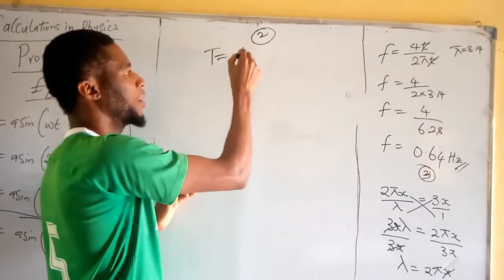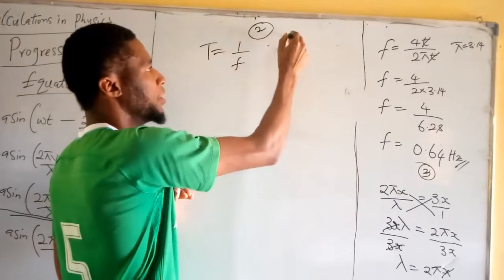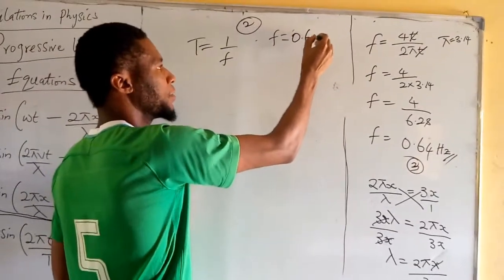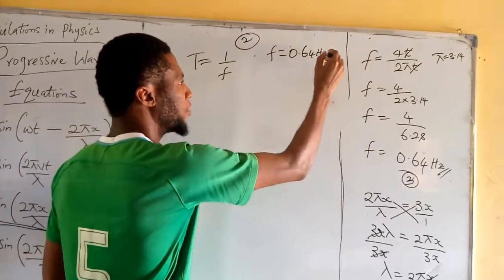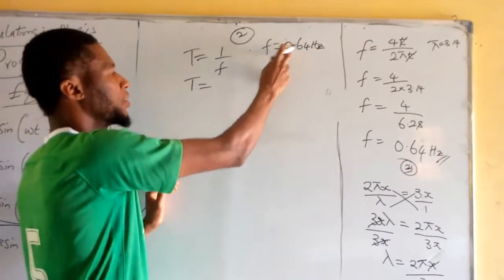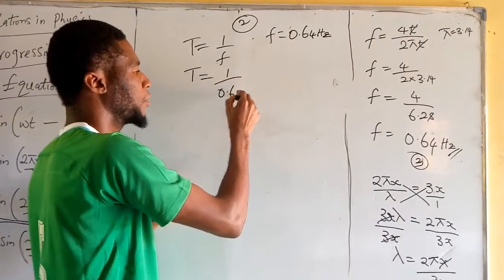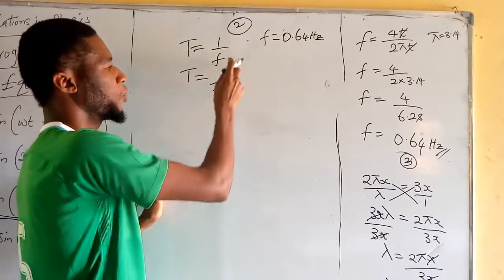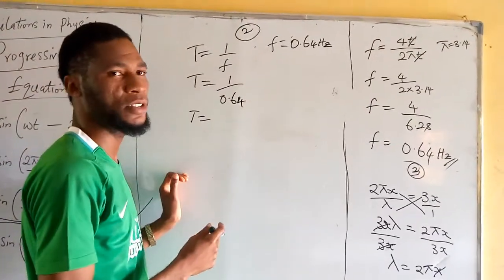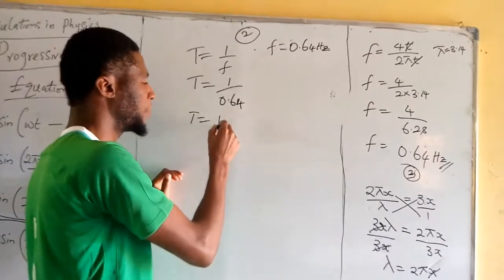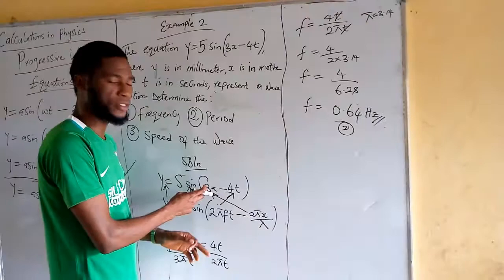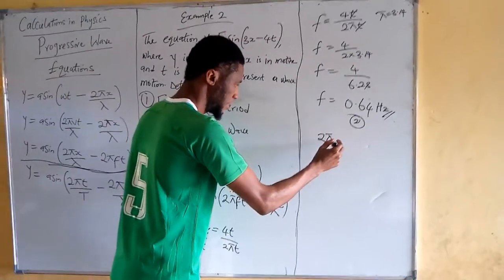Calculating the period: period equals 1 over frequency, and frequency equals 0.64 Hz. So the period equals 1 divided by 0.64, which gives approximately 1.56 seconds.